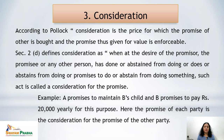Let's start with the third component: consideration. Among the essentials of a valid contract, the third one is consideration. According to Pollock, consideration is the price for which the promise of the other is bought, and the promise thus given for value is enforceable. In general terms, consideration means something in return. When a contract is made, there should be some consideration in return for the promise made by both parties.